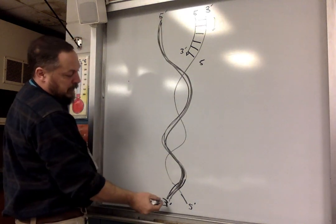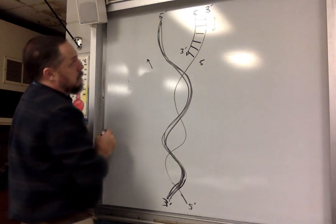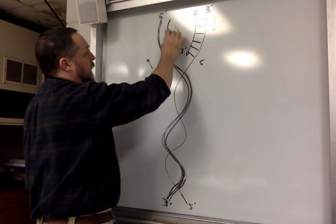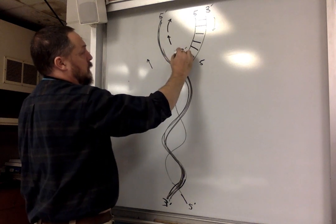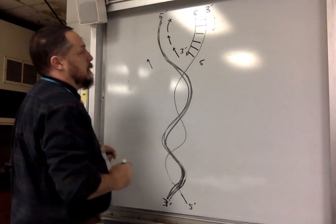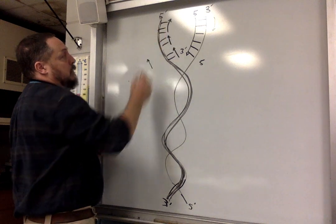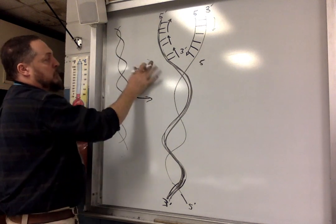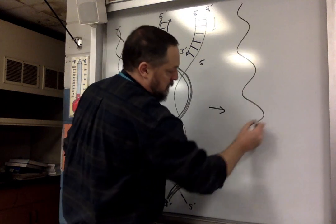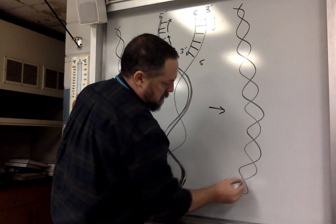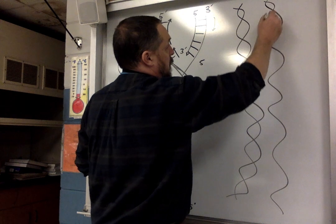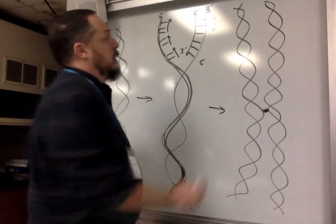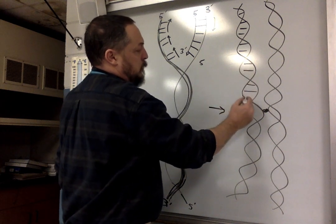The leading strand can be synthesized continuously because we're reading three to five. But on the lagging strand, the three prime end is on the other side, so we have to synthesize in segments — this section, then this section, then this section — and when far enough apart, those connections join together. That is DNA synthesis; when done, the strand gets twisted up into a double helix again.